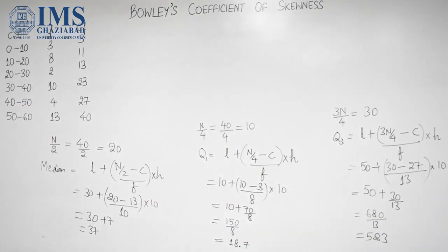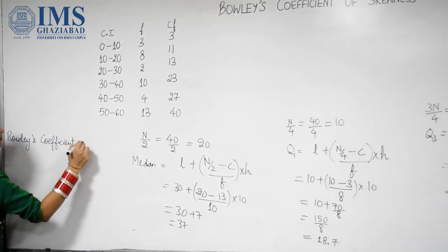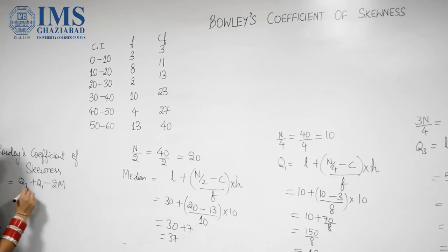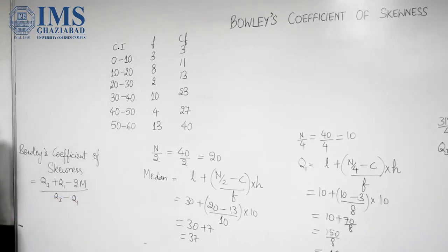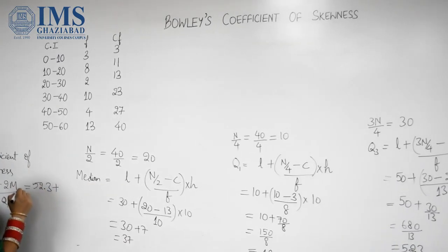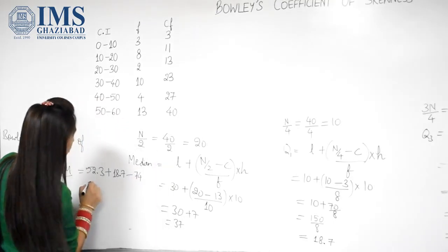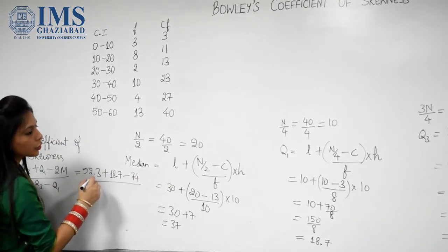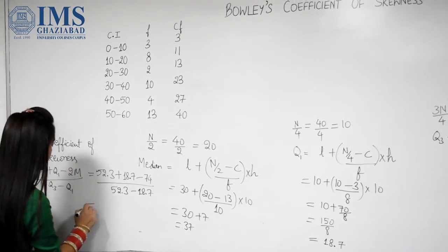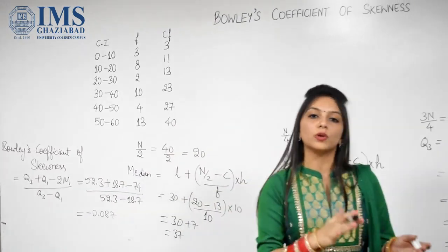Now Bowley's coefficient of skewness formula is Q3 plus Q1 minus 2 times median, divided by Q3 minus Q1. Putting in the values: Q3 is 52.3 plus Q1 is 18.7, minus 2 into median 37 which is 74, divided by Q3 minus Q1, which is 52.3 minus 18.7. Calculating this, we get minus 0.087 as our answer. So this is Bowley's coefficient of skewness, which is purely based on quartiles and median. Thank you.